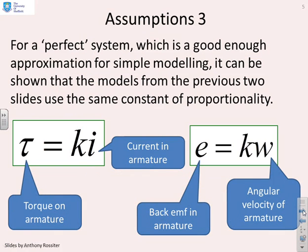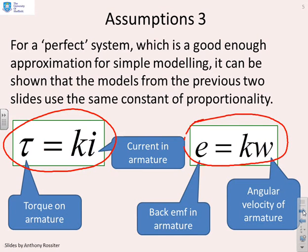Here's the final assumption, which is really valuable. We've said that you get E equals k·omega, and you get tau equals k·i. What you can show is that the k's in these two equations are the same. Obviously that assumes perfect modelling, but in terms of the insights you need for simple modelling of behaviours, it's good enough generally to take these two k's as the same, and that will simplify our modelling enormously.